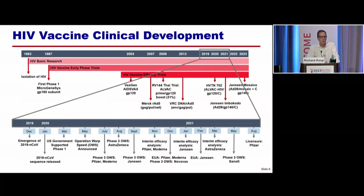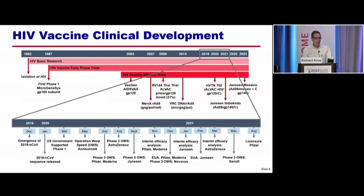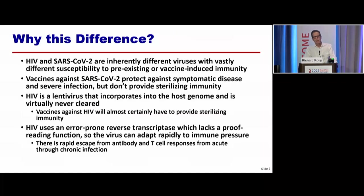It's important to put this in context. We all lived through the SARS epidemic and saw how rapidly the vaccine was developed. In less than a year, we had emergency use authorization after the discovery of SARS-CoV-2, and in under two years we had licensed vaccines. Why was it so quick for SARS-CoV-2 and why is it taking so long for HIV? People like to think it's mRNA — but the big problem is that SARS-CoV-2 and HIV are inherently different viruses with vastly different susceptibilities to vaccine-induced immunity.